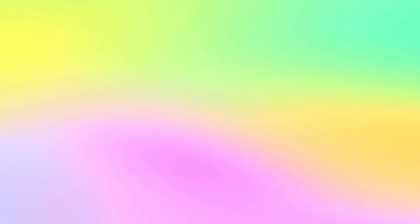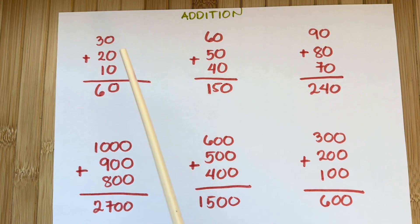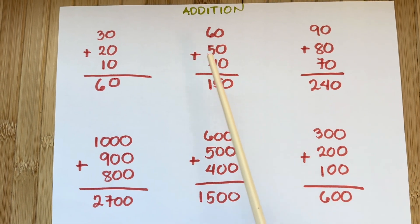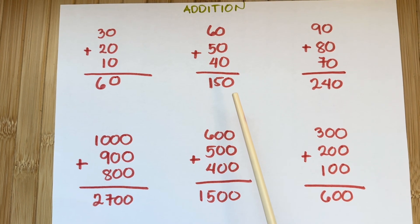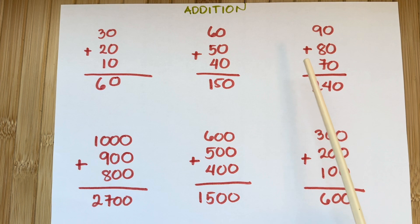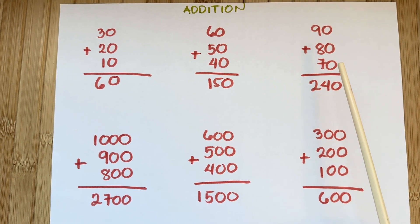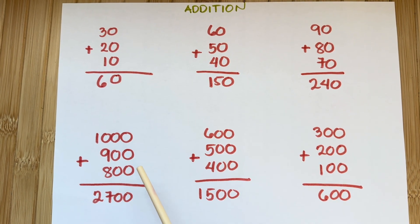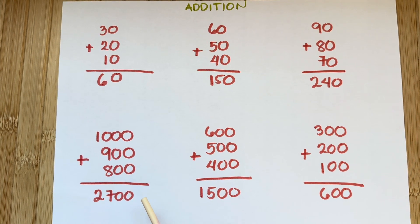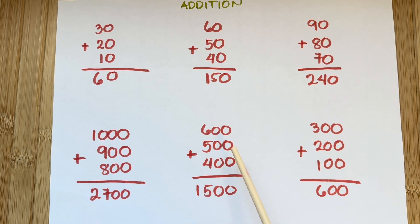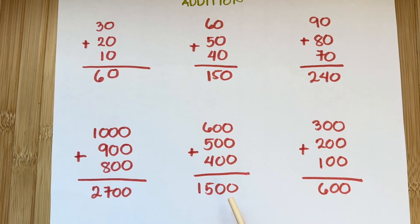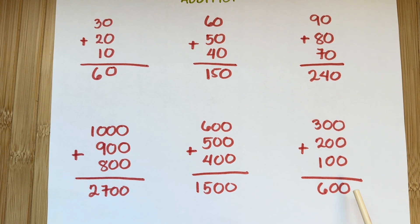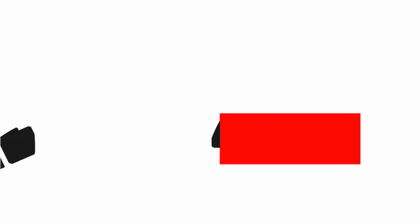Let's do a recap. Let's learn addition. 30 plus 20 plus 10 is equals to 60. 60 plus 50 plus 40 is equals to 150. 90 plus 80 plus 70 is equals to 240. 1,000 plus 900 plus 800 is equals to 2,700. 600 plus 500 plus 400 is equals to 1,500. 300 plus 200 plus 100 is equals to 600.